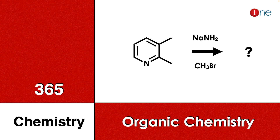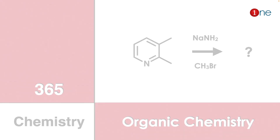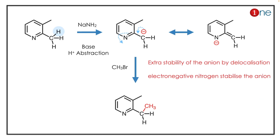Welcome to One Chemistry. This is the 365 Chemistry Series — organic chemistry questions for you. Here you have a compound with two-three dimethyl groups, sodium, and an alkyl bromide. You should find what the final product will be.